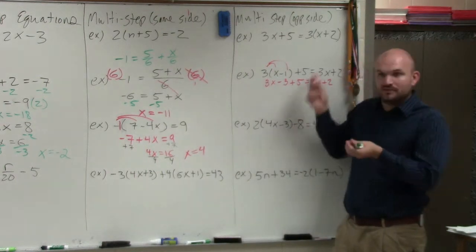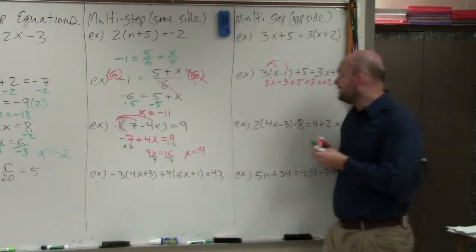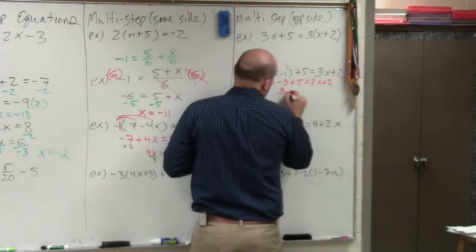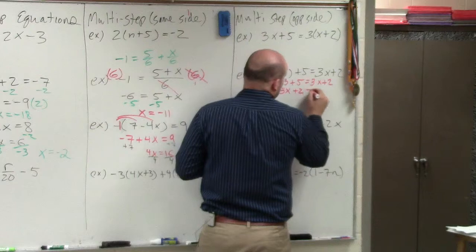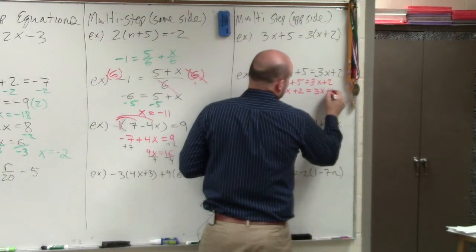You don't need to add 3 or anything like that. You just combine them. So in doing that, you get 3x plus 2 is equal to 3x plus 2.